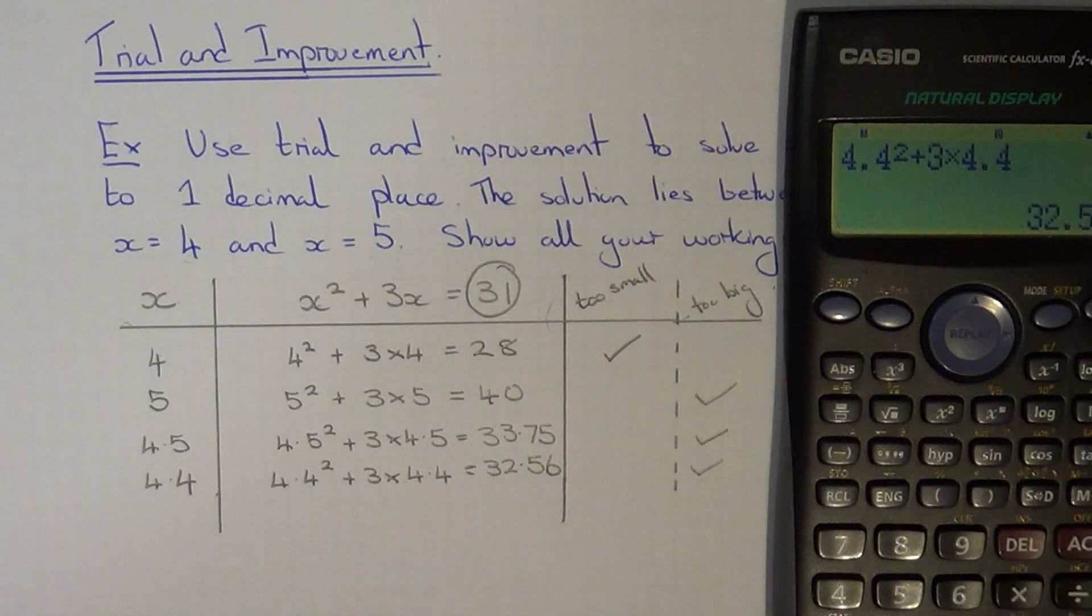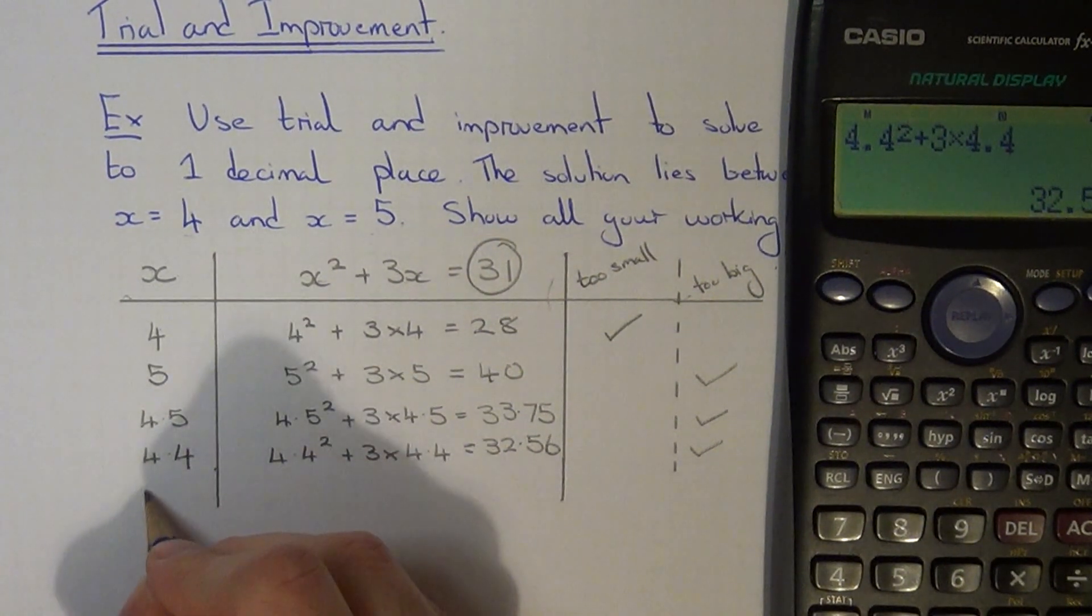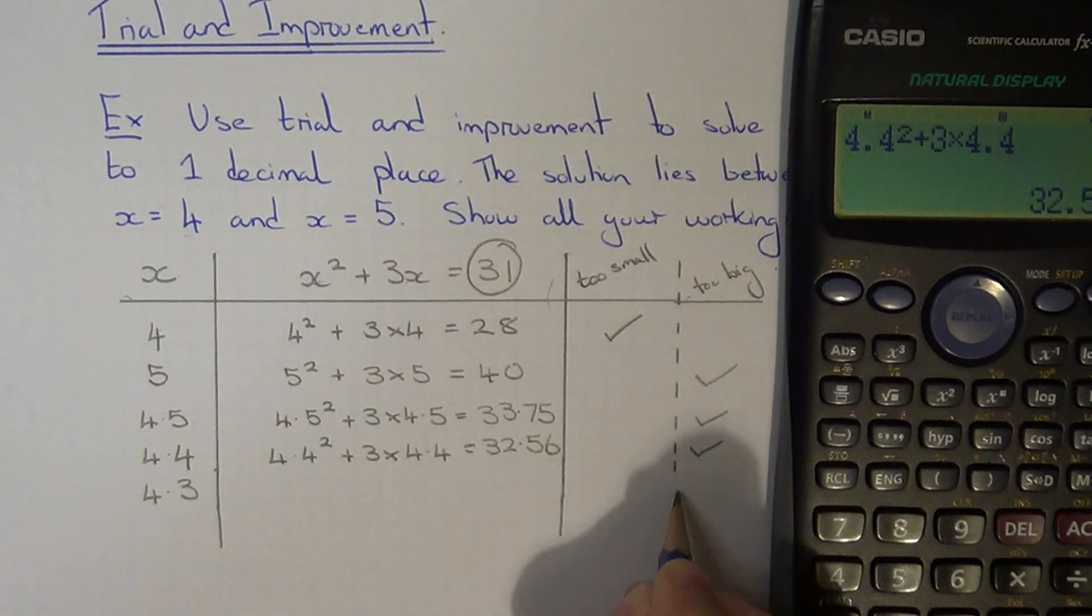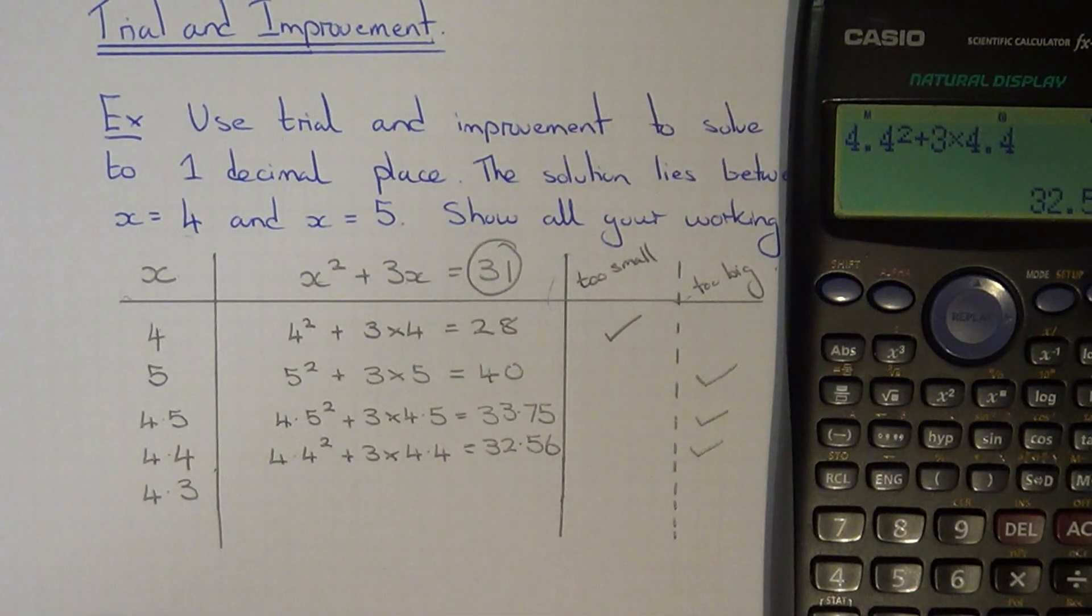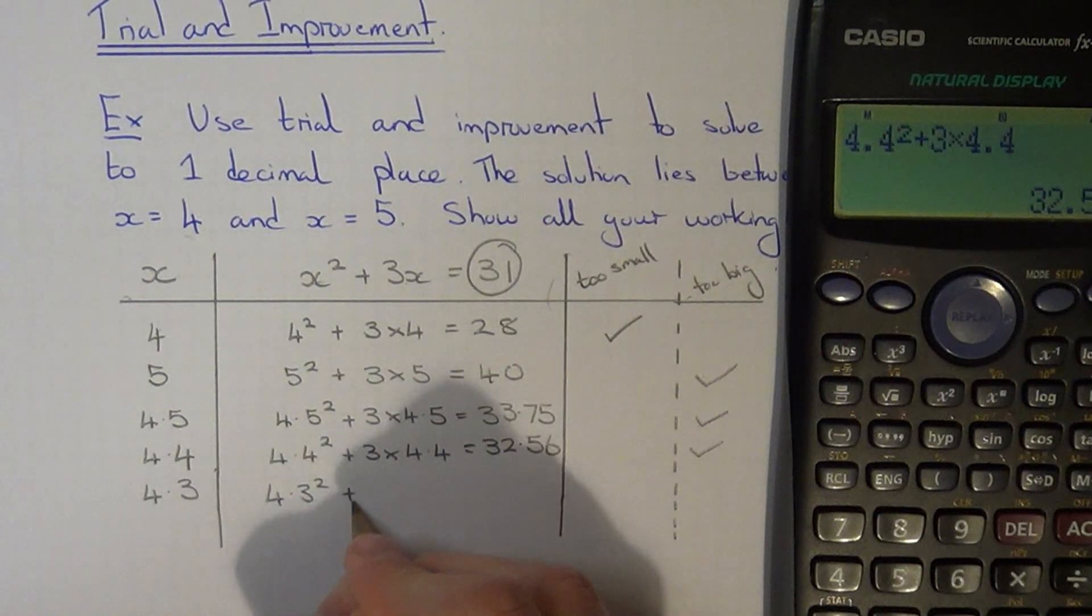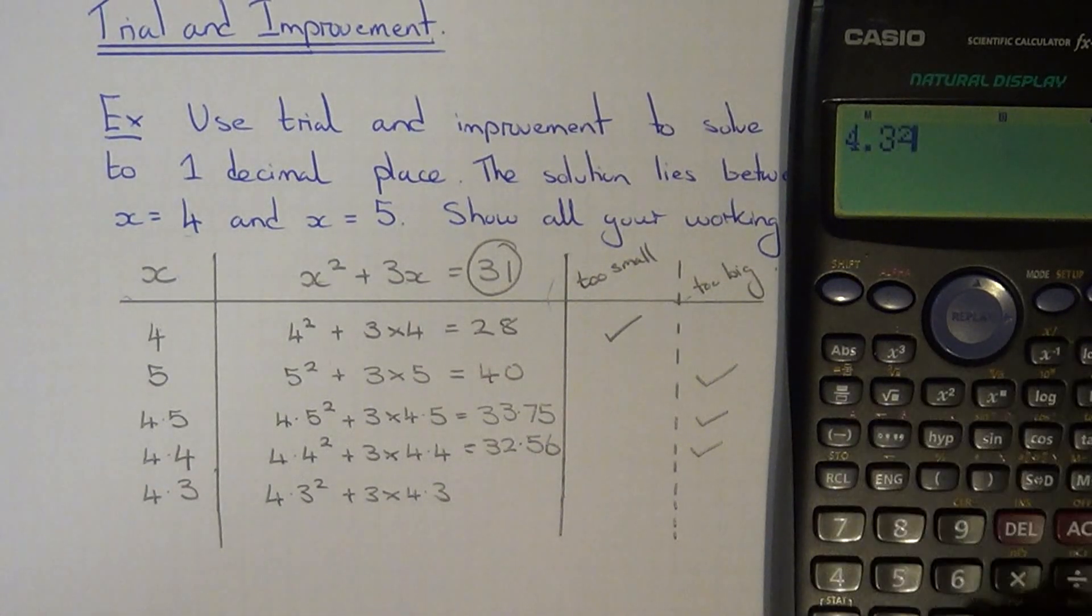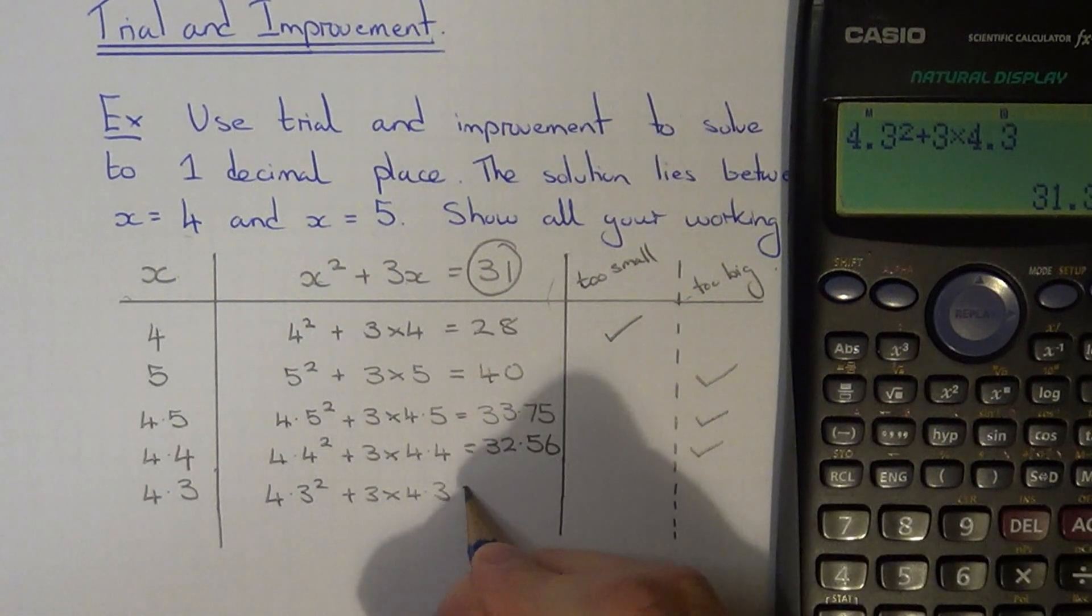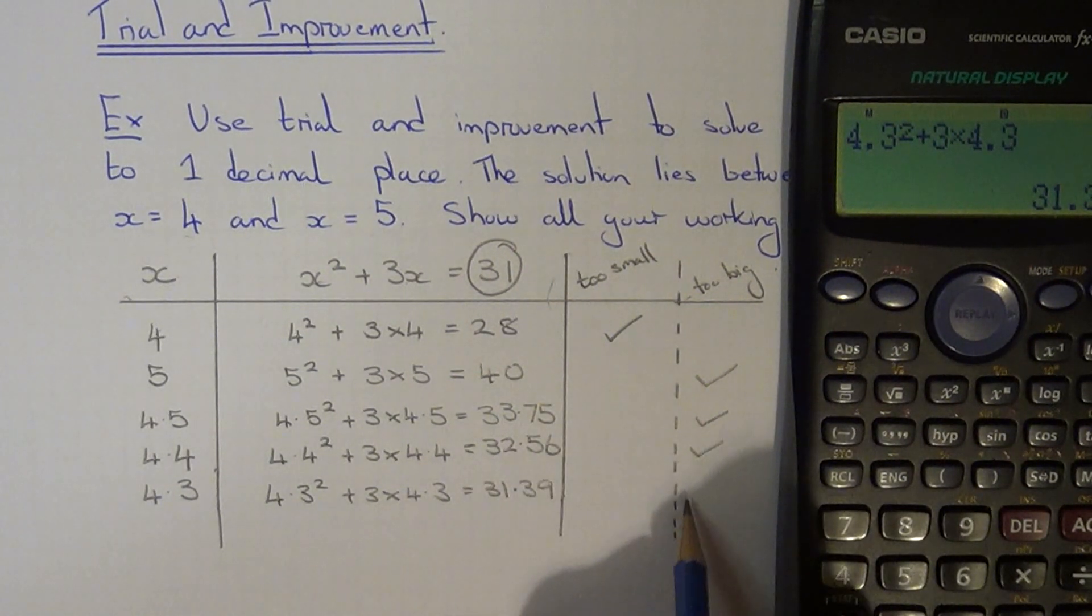So we need to keep doing this until we get one either side of 31. So 4.4 squared plus 3 times 4.4, so that is 32.56, so again this is too big. So we need to decrease by 0.1 again. So 4.3 squared plus 3 times 4.3, so that gives us 31.39, so again this is too big.